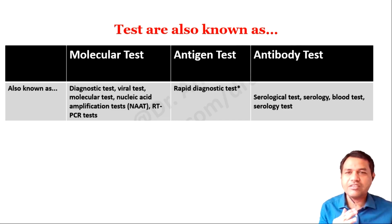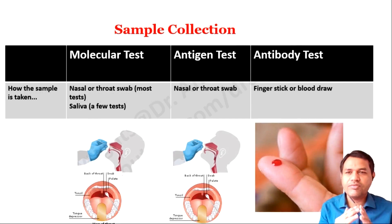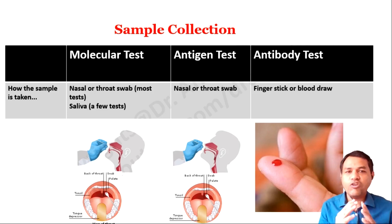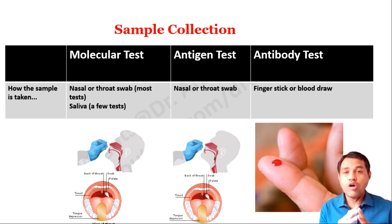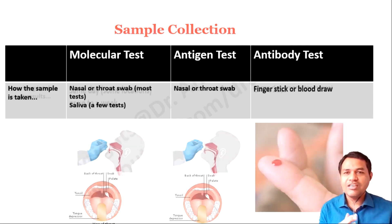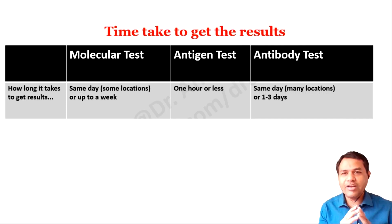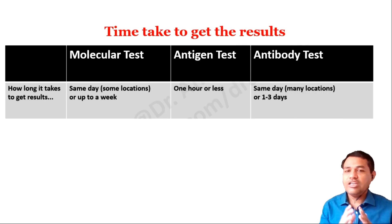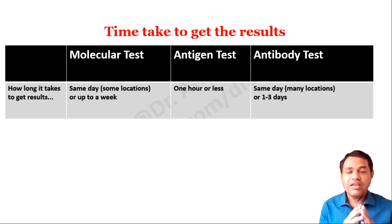Sample collection is the most important step. For the molecular test, a nasal or throat swab is taken; sometimes saliva is also used. For the antigen test, a nasal or throat swab is taken. For the antibody test, a finger stick or blood draw is used. Regarding turnaround time, the molecular test may return results the same day or up to a week depending on lab location. The antigen test is rapid — results in one hour or less. The antibody test takes the same day to one to three days depending on the lab.